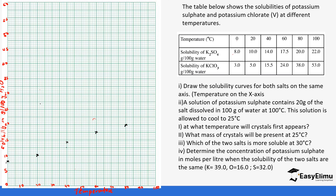We can now see how the curve for potassium sulfate looks. Join the points with a smooth best-fit curve — yours should come out smoother than this demonstration. The curve rises gradually from left to right.